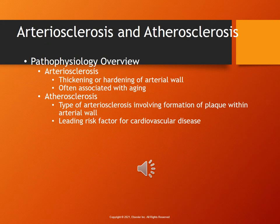Arteriosclerosis is a thickening or hardening of the arterial wall, often associated with aging, so we're naturally going to have some arteriosclerosis as we get older. Atherosclerosis is a type of arteriosclerosis that involves the formation of plaque within the arterial wall. The leading risk factor for this is cardiovascular disease. On page 707, table 33.4 shows risk factors of atherosclerosis.